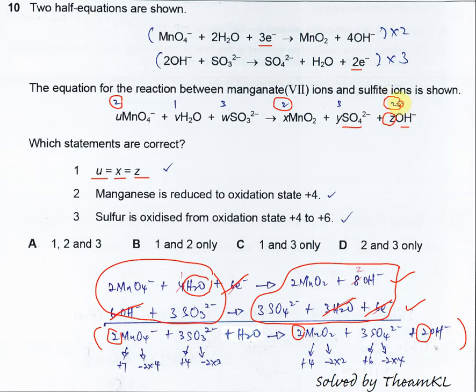So u is 2, x is 2, and z is 2. So first one, yes, correct.